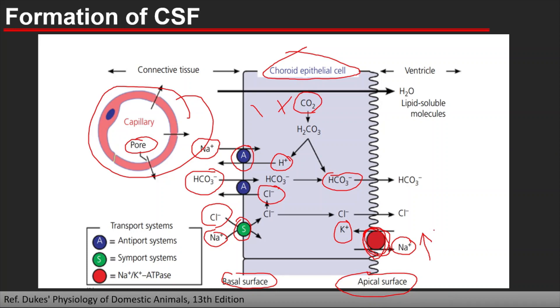As the sodium concentration is increasing, water always follows sodium, so water is drawn to this area because of sodium. Water always follows sodium. And as the sodium concentration is increasing, the positive ion is also increasing. To neutralize the positive ion, chloride is moving to this area, and bicarbonate is also moving to this area to neutralize the positive ion. That is how CSF is formed by these components.